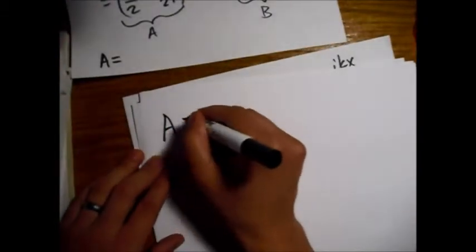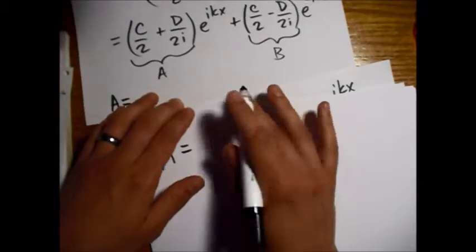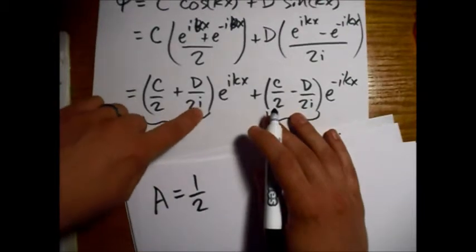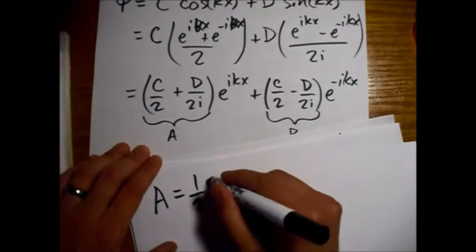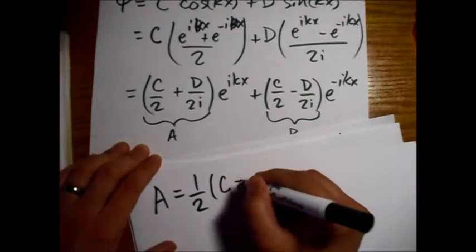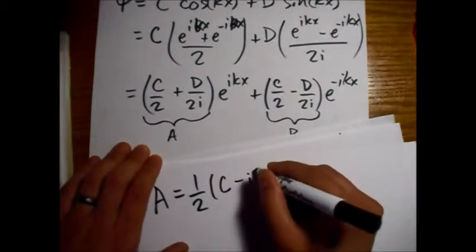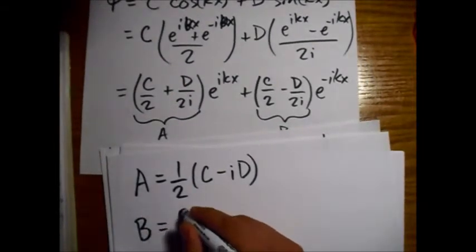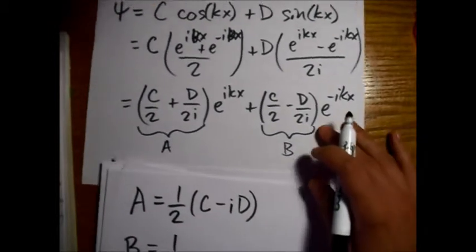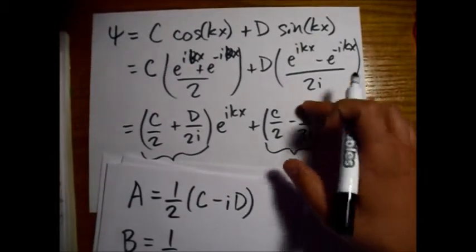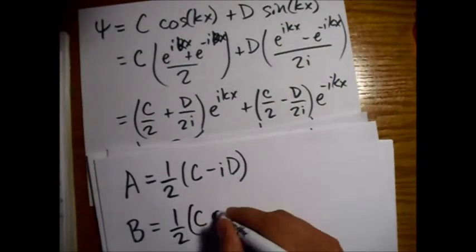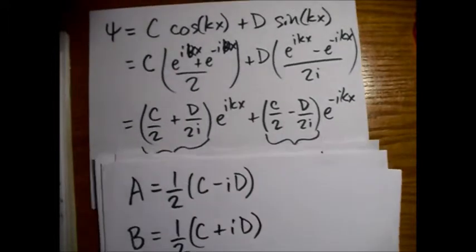So, A equals, we'll bring the one half out front. We're going to bring the i upstairs, and we'll get a minus sign from that. So we've got C minus iD, like this. And then, B equals one half, and bring the i upstairs again, and then we'll get a minus sign, so we get C plus iD.